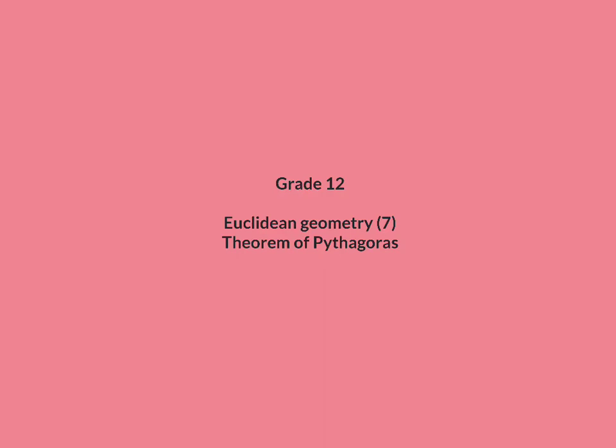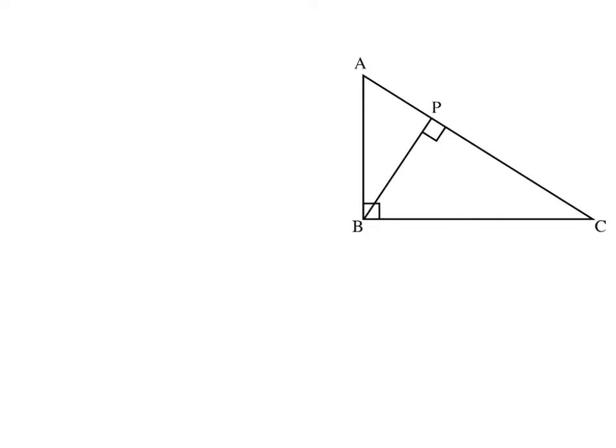In lesson 7 on grade 12 Euclidean geometry, we are going to have a look at the theorem of Pythagoras. The similarity theorem can be used to prove the theorem of Pythagoras, and we are going to have a look at that now and break it up into three steps.